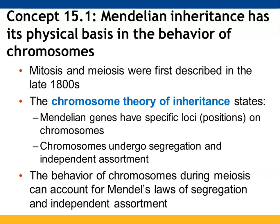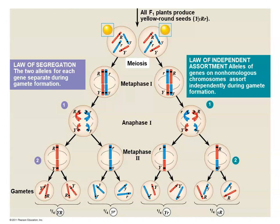Mitosis and meiosis were first described back in the late 1800s. The chromosome theory of inheritance tells us that Mendelian genes have specific positions on our chromosomes. These chromosomes are able to undergo both segregation and independent assortment, which would account for how chromosomes move during meiosis and would provide support for Mendel's laws of segregation and independent assortment. This connects the dots between Mendel's characters and what we now know takes place with our chromosomes.